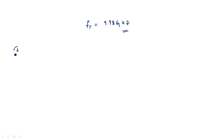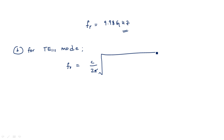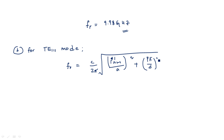Similarly, we can calculate for TE111 mode. The resonant frequency formula for TE mode is: f_R = C / (2π) × √[(P'_nm / A)² + (pπ / D)²], which is the same formula but uses P'_nm instead of P_nm.